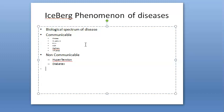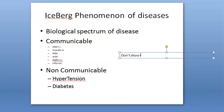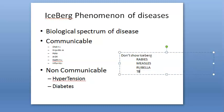There are also diseases which do not show iceberg phenomena. These include rabies — which cannot be hidden — measles, which is quite visible, rubella, and tetanus. These are the diseases that do not show the iceberg phenomenon.